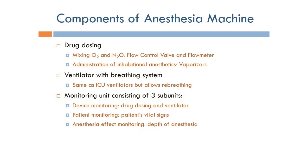The main components of the anesthesia machine are: first, the drug dosing part, which is responsible for mixing oxygen and nitrous oxide using flow-controlled valves and flow meters, and for the administration of inhalation anesthetics, which is taken care of by vaporizers.